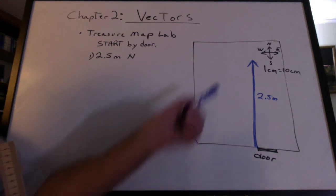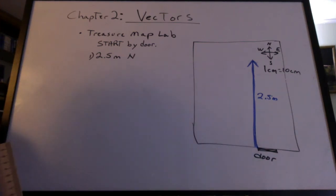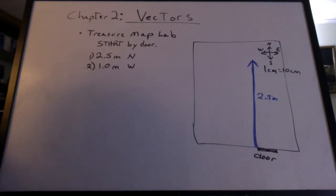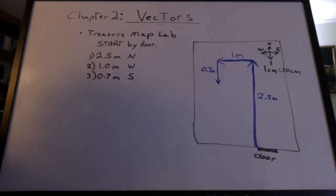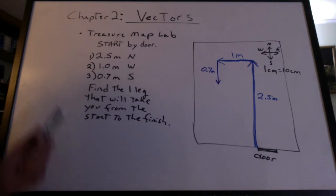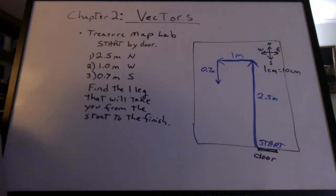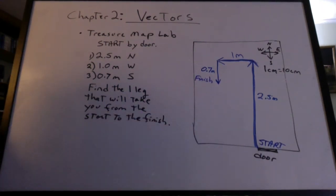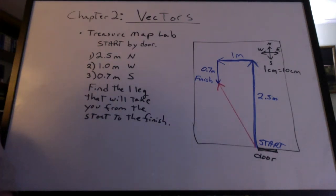Notice there's an arrow at the end of the line — you have to have an arrow. My next leg I've chosen is one meter west, and I draw it in right after the first one. The third leg of the journey is 0.7 meters south, and I've drawn that after the second leg. Then the question was: can you find the one leg that will take you from the start to the finish? There's the start and there's the finish.